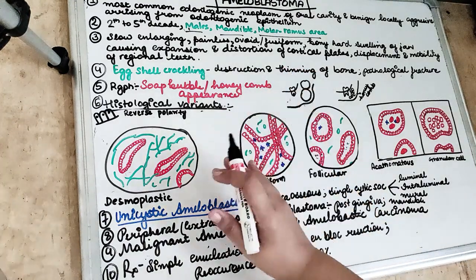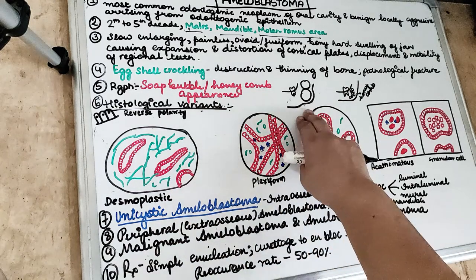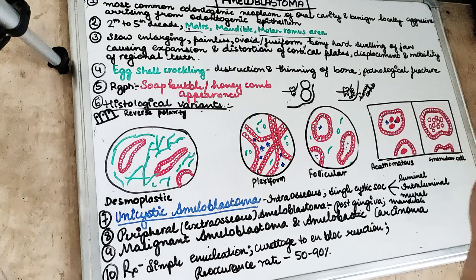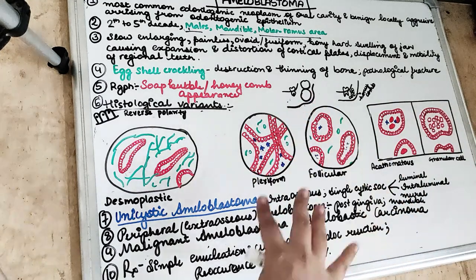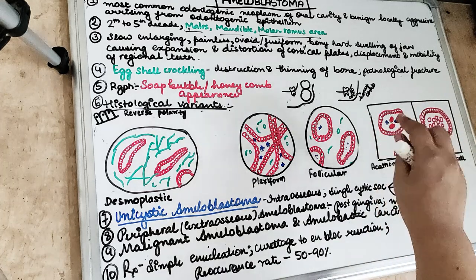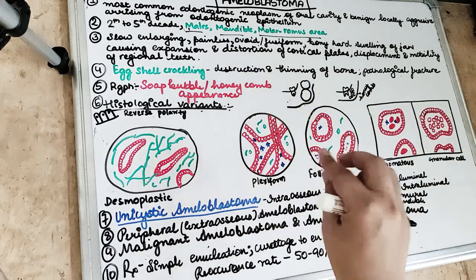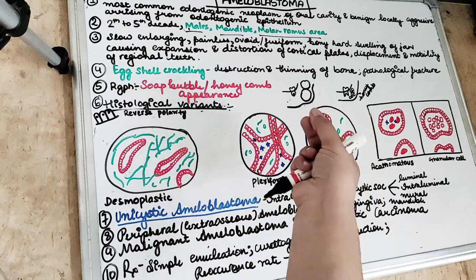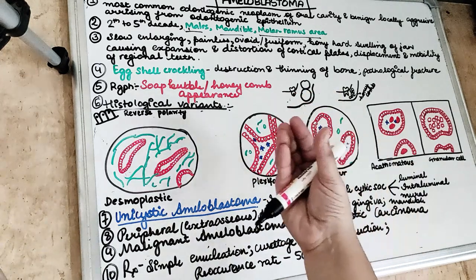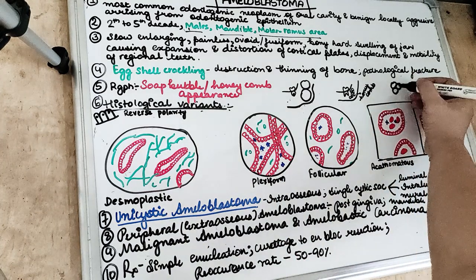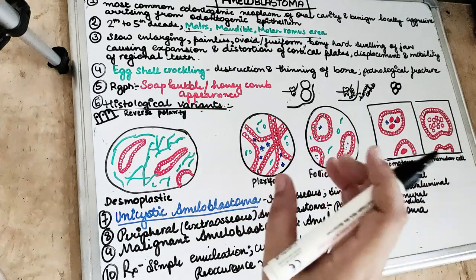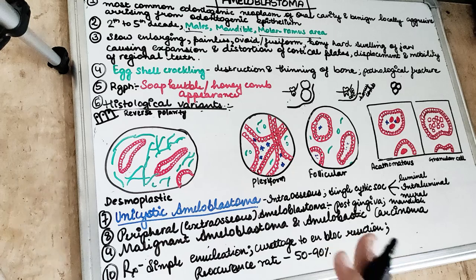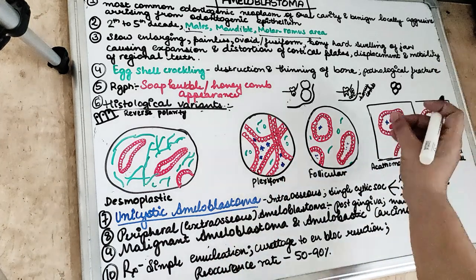Radiographically, we see two appearances: soap bubble or honeycomb appearance. When the radiolucent loculations are large, they look like soap bubbles. When the multilocular radiolucent loculations are small, they appear like a honeycomb. In between these loculations there are bony septa. There is buccal and lingual cortical expansion, resorption of roots of adjacent teeth, and the margins of the lesion are irregular and scalloping.